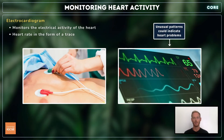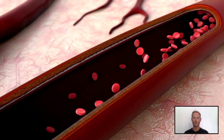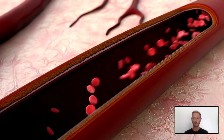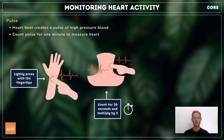The electrical activity of the heart can be monitored using an ECG, or electrocardiogram. Electrodes are attached to the skin, and heart rate can be viewed on a monitor in the form of a trace. Each time the heart beats, a pulse of high-pressure blood moves through the arteries, which can be felt in the radial artery just above the thumb and the carotid artery in the neck. Heart rate can be measured by counting your pulse for 30 seconds and multiplying by 2, or counting for 15 seconds and multiplying by 4.